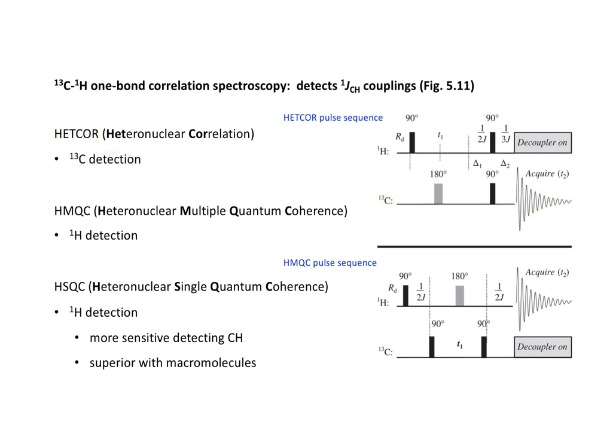The method that is used most widely today is HMQC. This is a proton-detected spectrum which detects carbon-13 nuclei covalently bonded to the protons that are detected. This has the advantage of the high sensitivity of the proton to the NMR phenomenon for signal acquisition, and is limited only by the relatively low natural abundance of carbon-13 of 1%. However, the HMQC experiment does not require any more time than a normal carbon-13 NMR experiment.